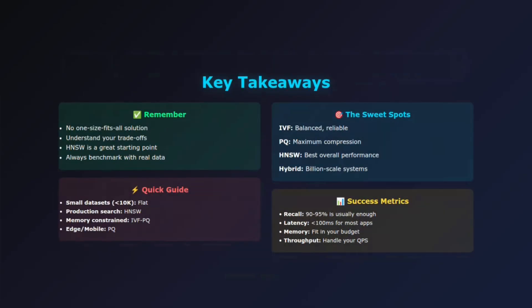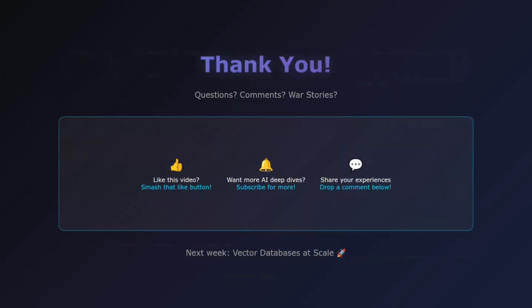Let's recap. Vector indexing solves the fundamental problem of finding similar vectors quickly in high-dimensional spaces. IVF clusters your data, PQ compresses it, HNSW builds navigable graphs, and hybrid approaches combine the best of multiple worlds. Key takeaways: there's no one-size-fits-all solution, understand your trade-offs, HNSW is a great starting point, and always benchmark with real data. The best index is the one that meets your specific speed, memory, and accuracy requirements. If this video helped you understand vector indexing, smash that like button and subscribe for more deep dives into AI infrastructure. Drop a comment with your vector indexing war stories — I'd love to hear about your experiences. Until then, happy vector searching.